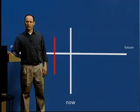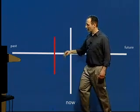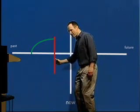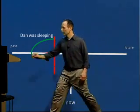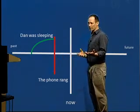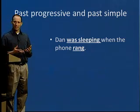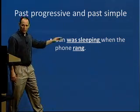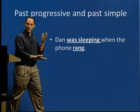If I want to show this on the timeline, the red line shows the phone rang at that time, and then the green line is going to show Dan was sleeping at this moment in the past. Dan was sleeping right here, and then we have the phone rang, which is the red line — that's what interrupted the sleeping. So if I want to look at this in a sentence, I can combine both ideas with past progressive and past simple: Dan was sleeping when the phone rang. The 'was sleeping' started and was in progress at that time when the interruption happened — that was the phone rang.